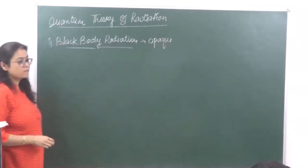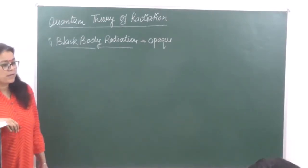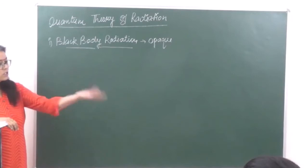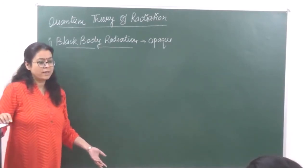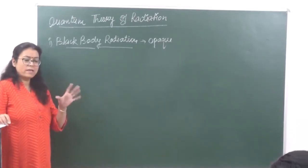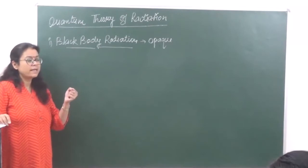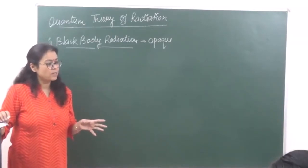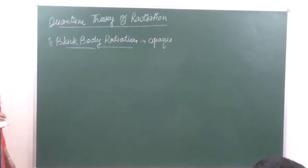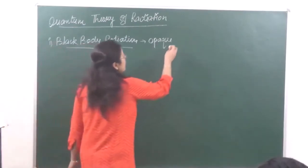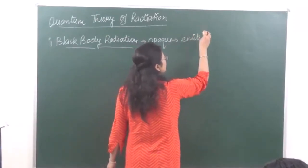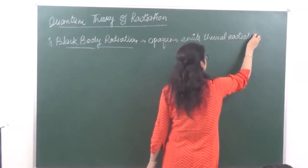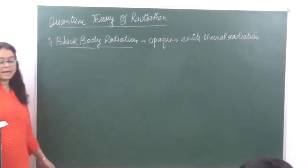It is an opaque substance. We have three types of substances: transparent, translucent, and opaque. Transparent means you can see through it properly. Translucent means you can't see through very clearly. Opaque is something through which you cannot see at all. So a black body is an opaque object that emits thermal radiation.